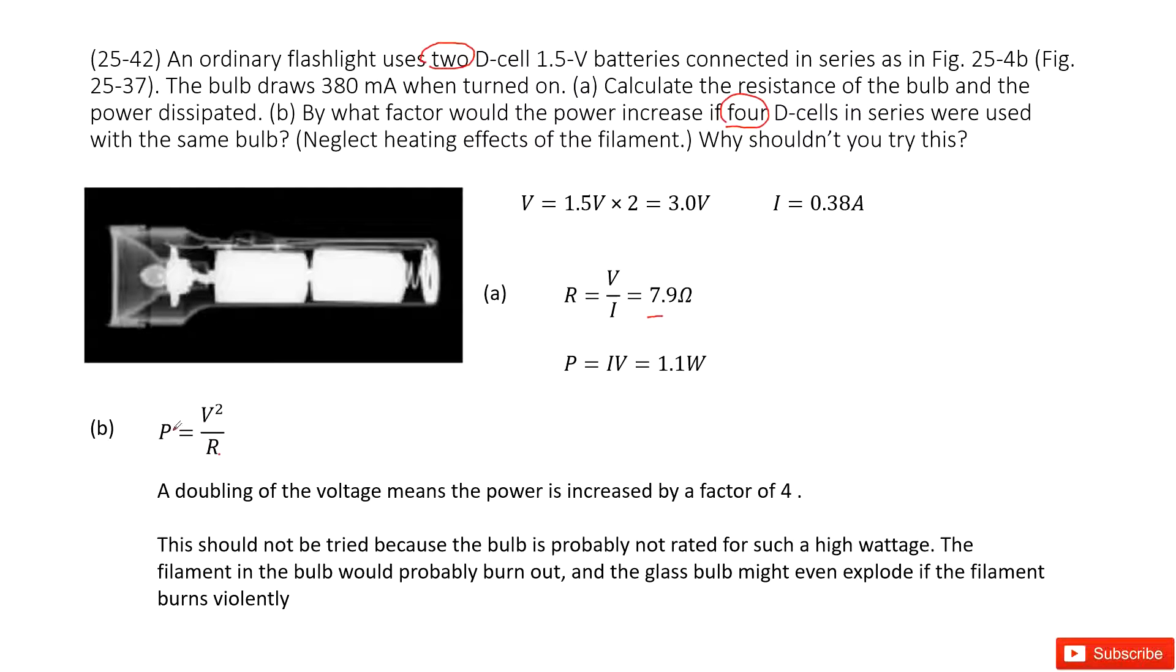You can see P has a linear relationship with V squared. In this case we see the voltage increased twice. So very straightforward, the power was increased four times. Two squared is four.